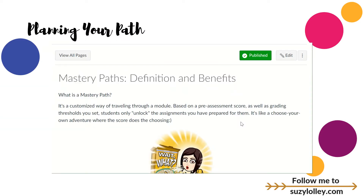I'm recording this straight out of Canvas, so hopefully you can see everything. Let's talk about what a mastery path is. Basically, it's a choose-your-own-adventure — if you're a child of the 70s or 80s like me and used to read those books where you'd get to kind of invent the story as you go. You are the teacher, and you get to invent different paths for your kids to travel through a module. Here's the deal: the score does the choosing.